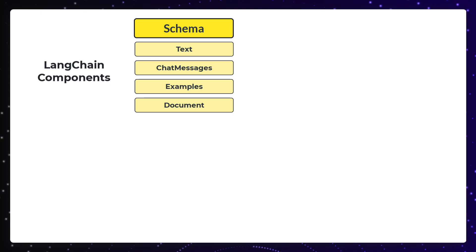Text is the most used data type as a lot of interfaces in LangChain are broadly speaking text-in, text-out. But for the end user, chat messages are more tangible, mostly due to the popularity of OpenAI ChatGPT. Examples are used to fine-tune the model and document is just a representation of a piece of unstructured data. It consists of page content and some metadata.